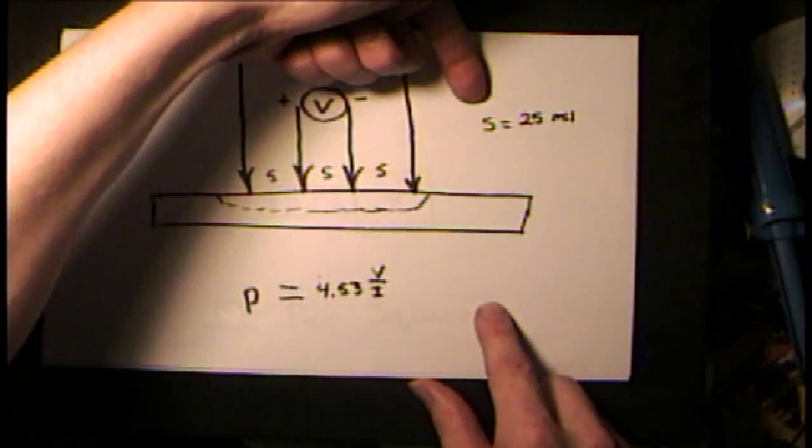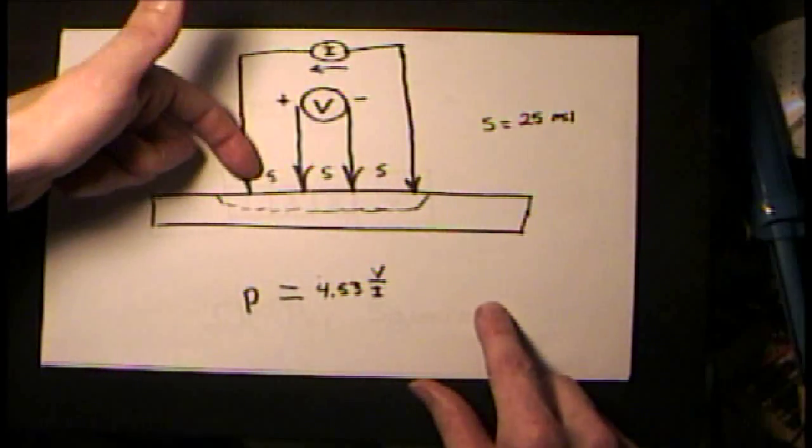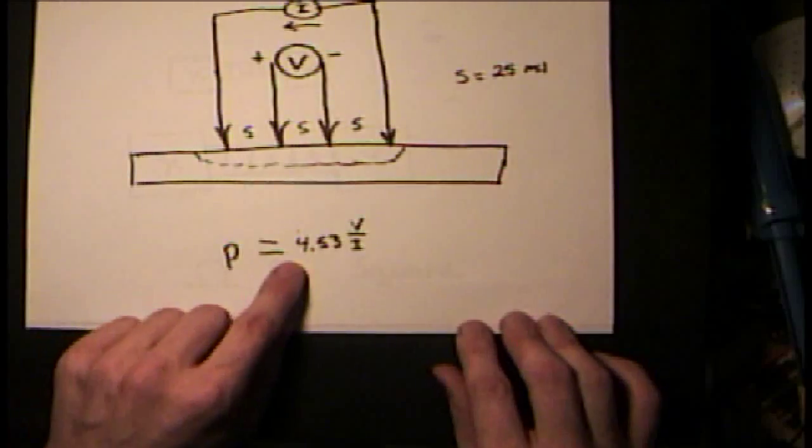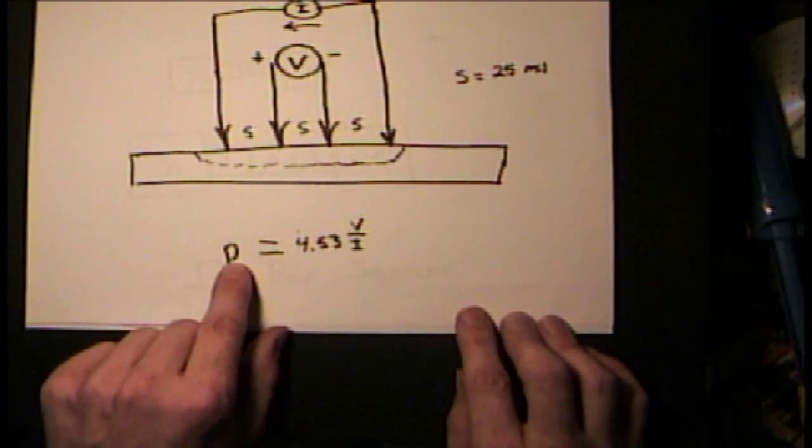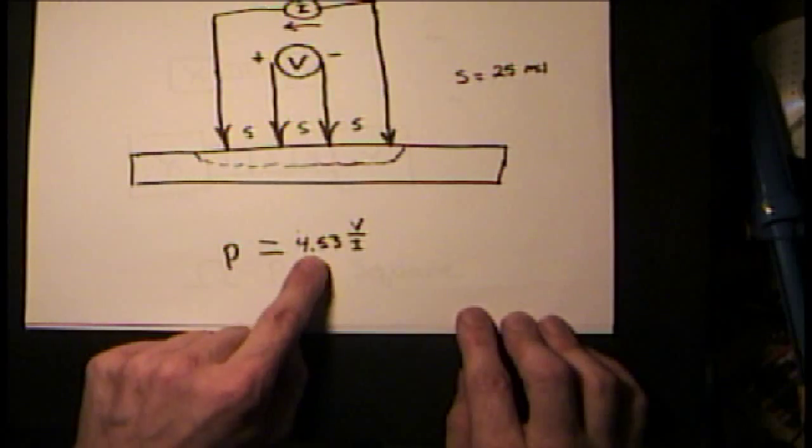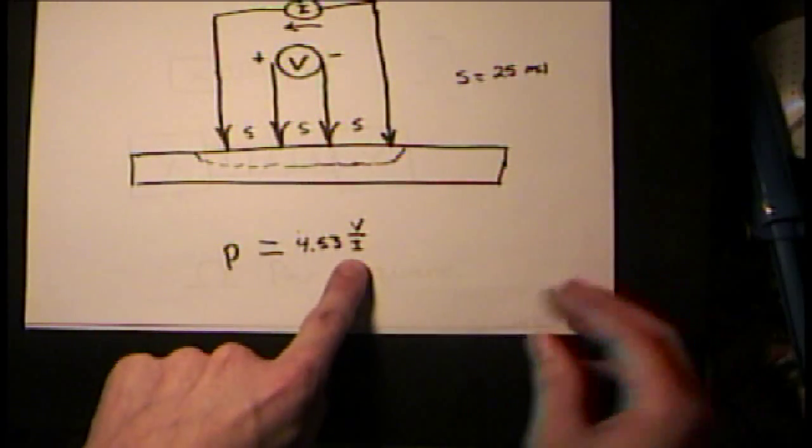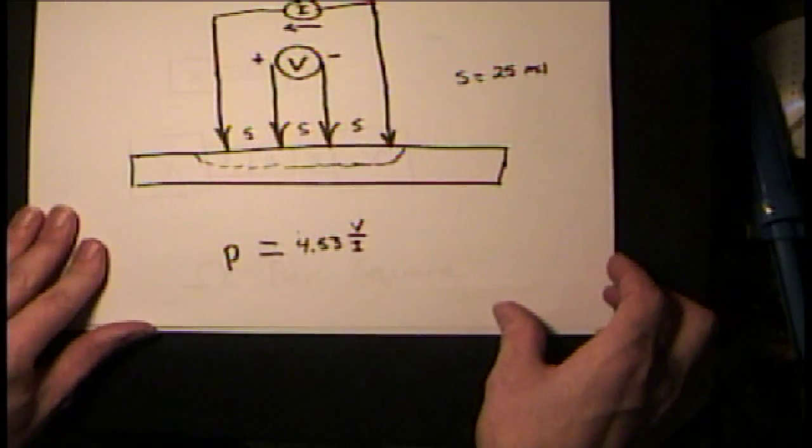And if you space your probes 25 mils apart, this is the equation that you would use. The sheet resistance of your wafer will be 4.53 with V over I, voltage over the current.